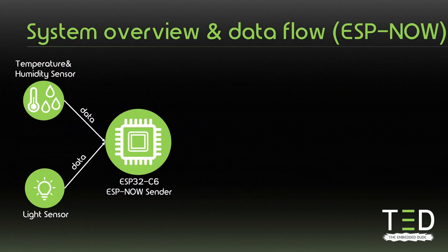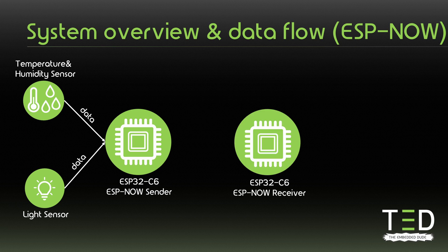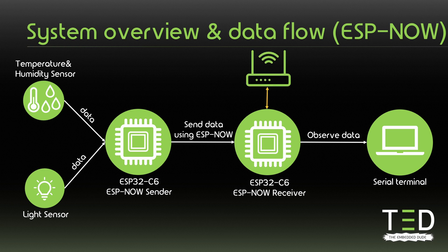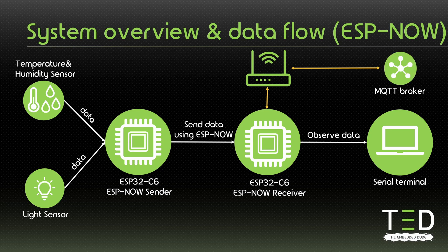In comparison, the ESPNOW setup looks like this. Again we have our ESP32C6 collecting data from the sensors via I2C. Instead of connecting to a Wi-Fi access point, the ESP32C6 is now using ESPNOW, which requires a second ESP microcontroller to receive the messages. Via a serial terminal I am connecting to the second ESP32 to read the data. If we wanted to send the ESPNOW data to an MQTT broker, the second ESP32 would need to be configured as a bridge to connect to an access point, receive ESPNOW data, and translate it to MQTT and vice versa. But that is a topic for another video.